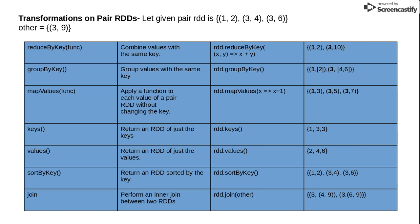reduceByKey reduces elements key by key — it combines the values of similar keys. Here I have a function rd.reduceByKey where I apply custom logic: x, y equals x plus y, meaning all values belonging to a similar key will be added. For key 3, x will be 4 and y will be 6, so the output is 4 plus 6 equals 10, giving 3 comma 10. For key 1, since only one element exists, it will be 1 comma 2.